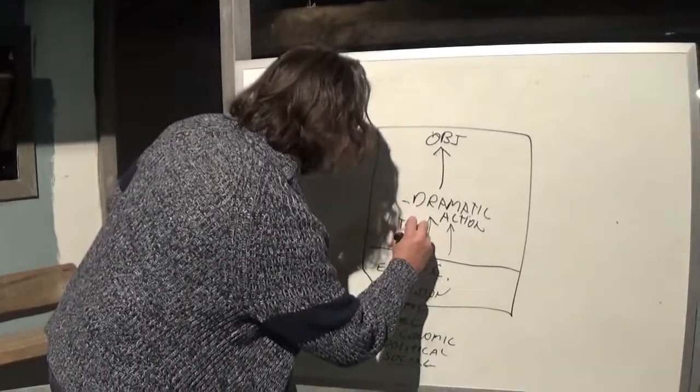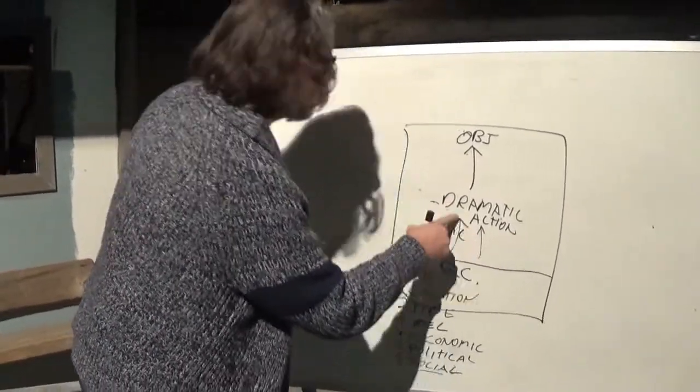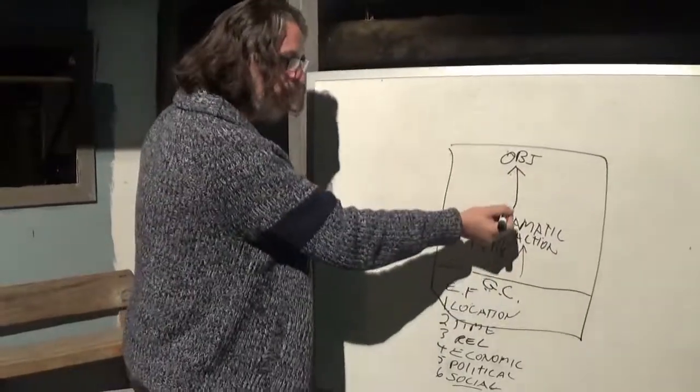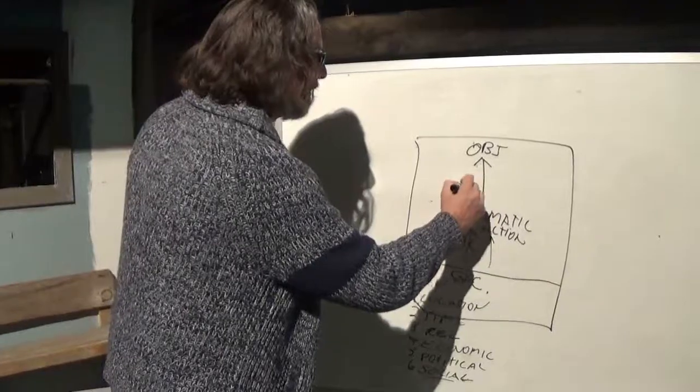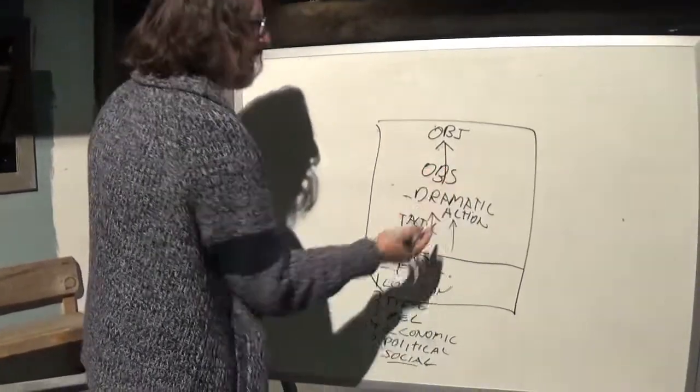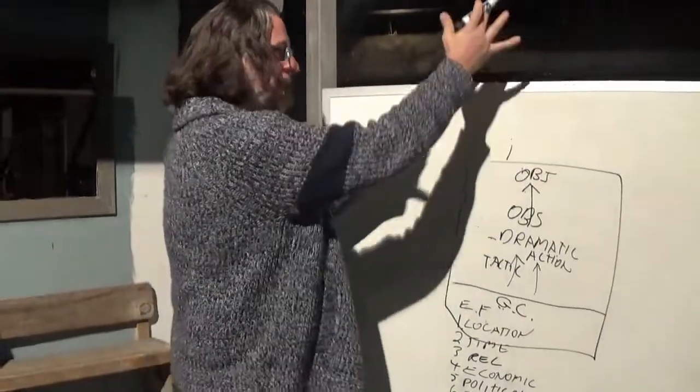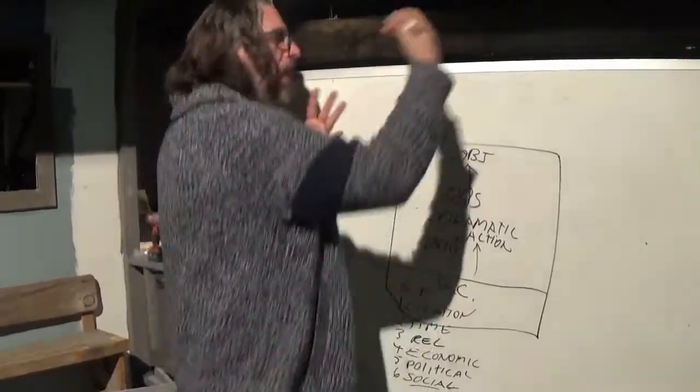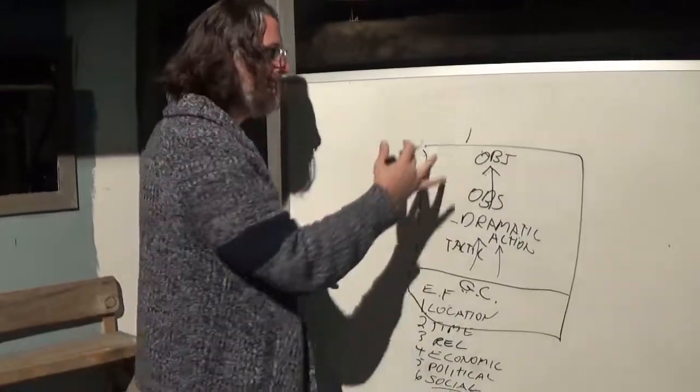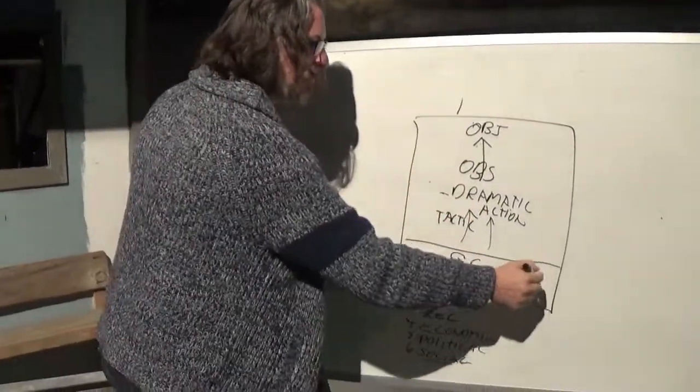We talked about the tactics, which basically is your dramatic action. What are you doing to get to your objective? There are obstacles in the way. We've talked about that. And then from this, at the top, you do all this out of the doing. It becomes a character.